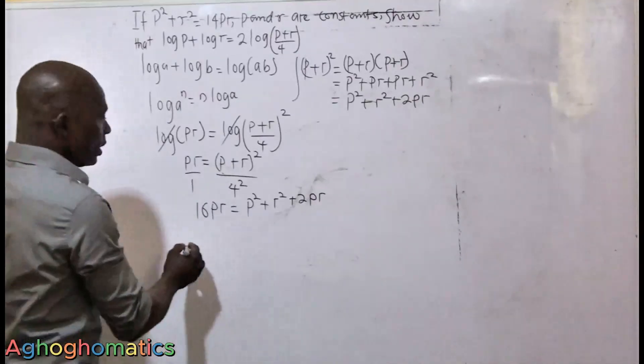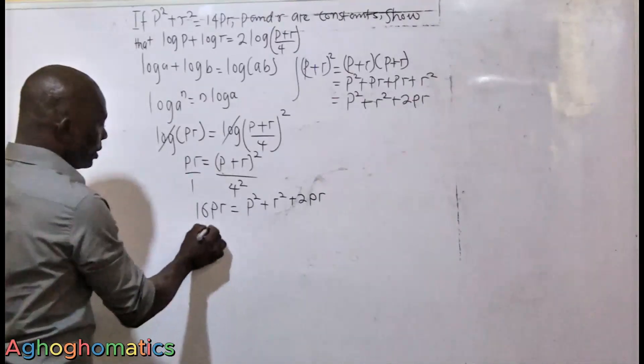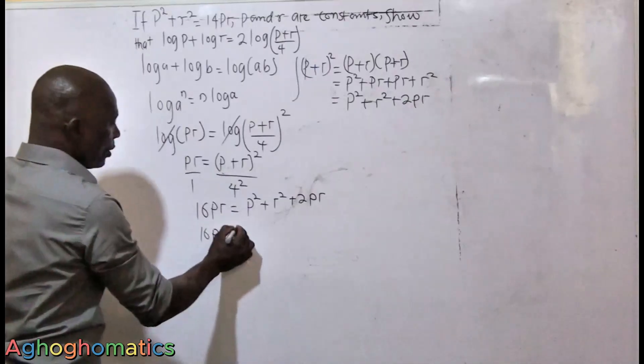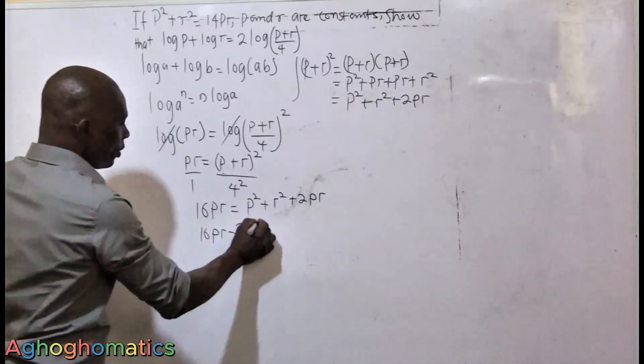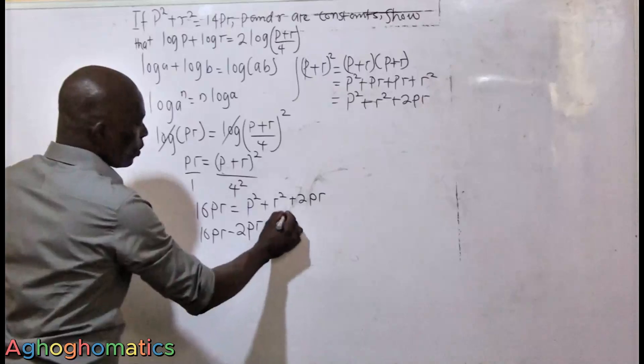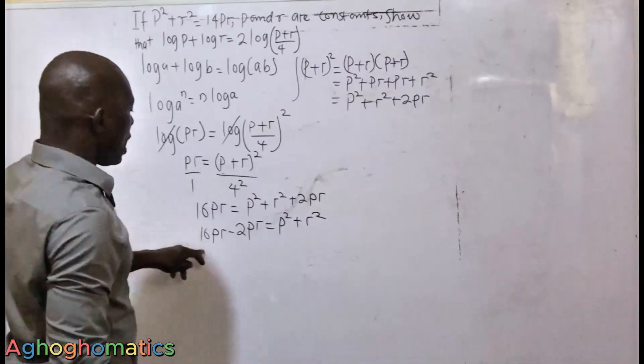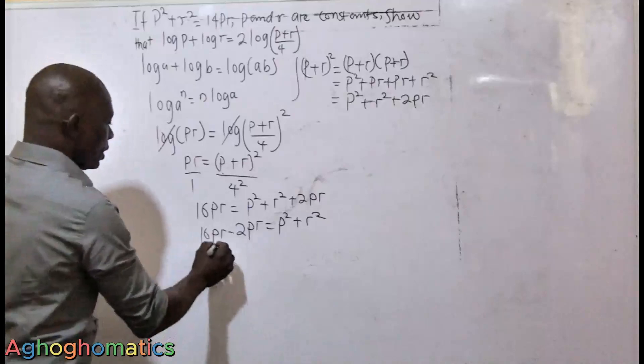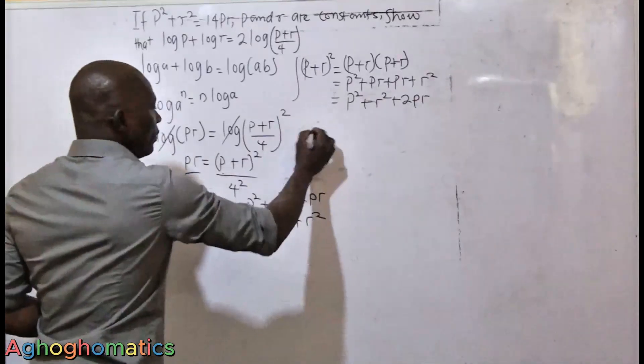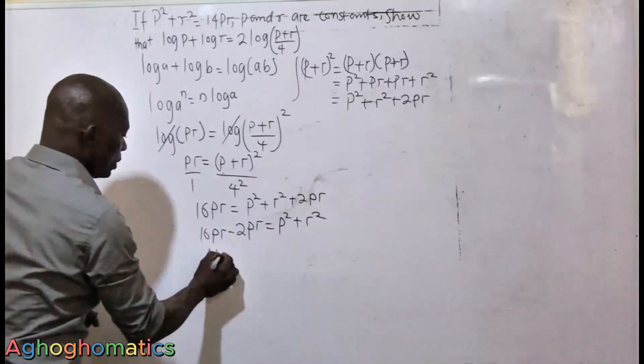Now 16PR minus 2PR will give us 14PR is equal to P squared plus R squared.